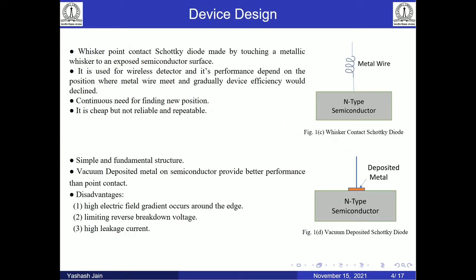Let's start with the device design. In the early 1900s, the first practical device was implemented by touching a metallic whisker to an exposed semiconductor surface. It was used as a wireless detector — cheap but not reliable, because the performance would degrade gradually and a new contact position had to be found. The next design is the vacuum deposited metal-based Schottky diode, which is a simple and fundamental structure.